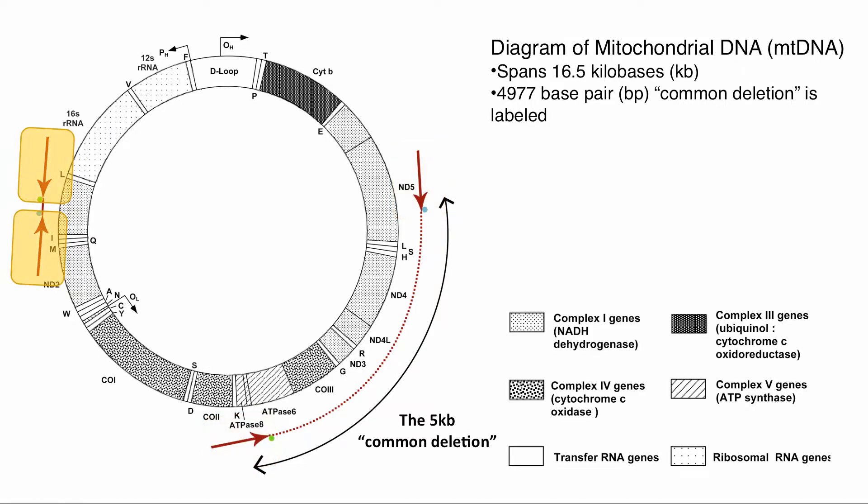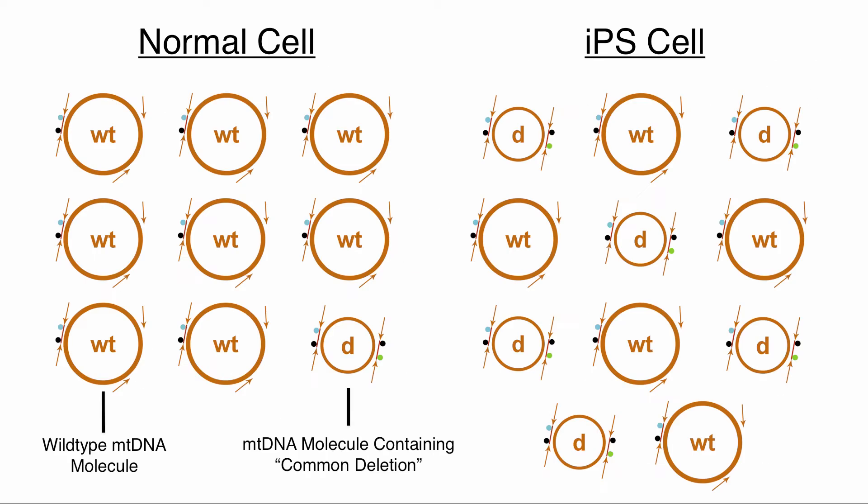The second set amplify in all molecules, specifically a region containing no-known deletions. Zooming out to the rest of the cell, we see that this constant control region acts as an internal control to account for a varying number of mitochondrial DNA molecules in every cell.